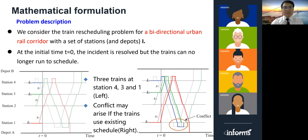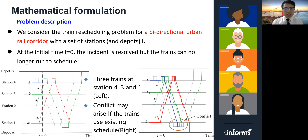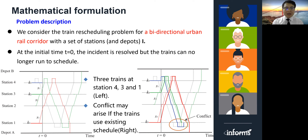Now for the second part: our mathematical formulation. We describe the problem as follows. We consider the rescheduling problem for a bidirectional urban rail corridor with a set of stations and depots. At the initial time T0, the incident is resolved but trains can no longer run to schedule. From the left figure, we can see that three trains are delayed at station four, station three, and station one, and the dashed lines represent the planned timetable. In the right figure, if trains still use the existing schedule, a conflict may arise at the turnaround station. So it is impossible to use the initial schedule after an incident.